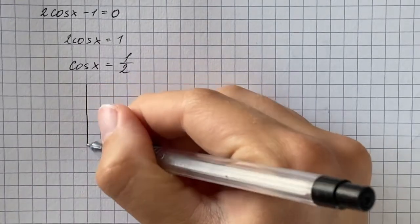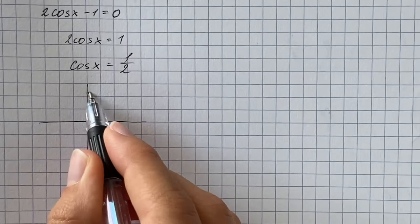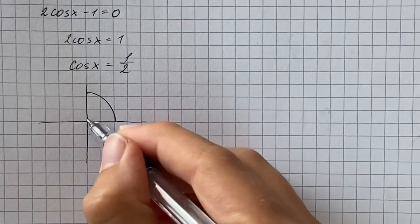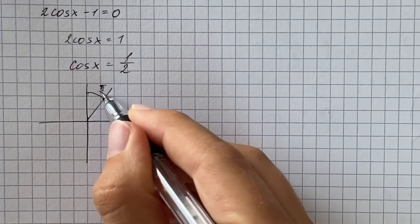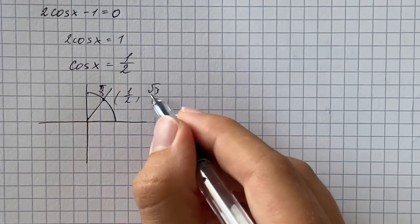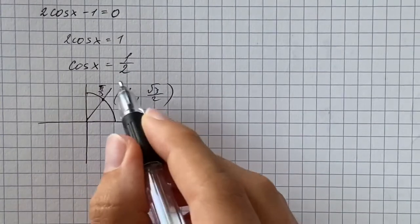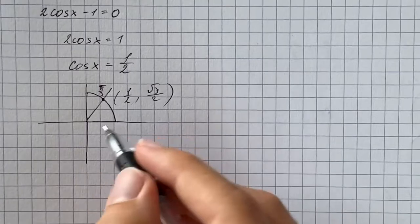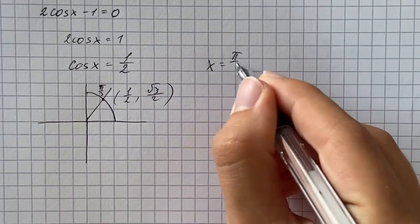Here we're going to use the unit circle. There is angle π over 3, and that angle hits the unit circle at 1 half comma square root of 3 over 2. The x coordinate, cosine represents the x coordinate, so our first solution is going to be x equals π over 3.